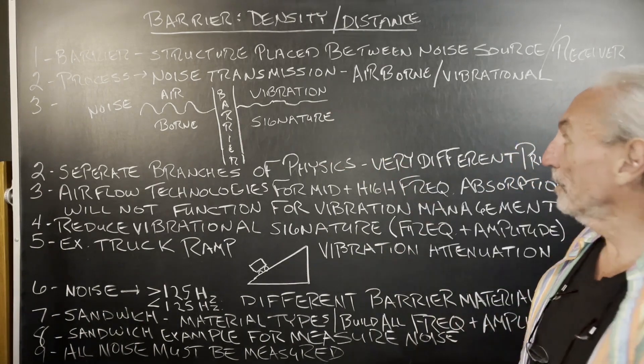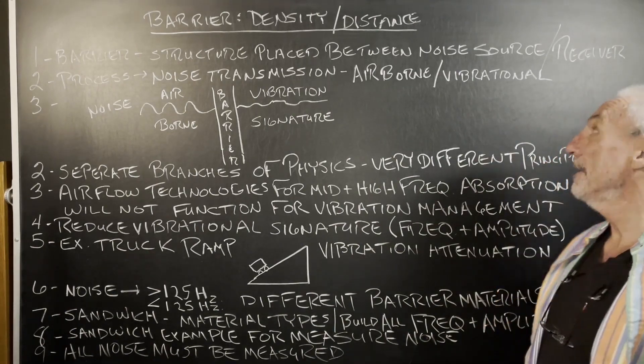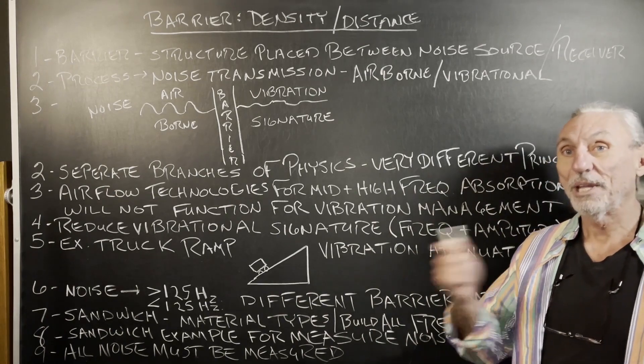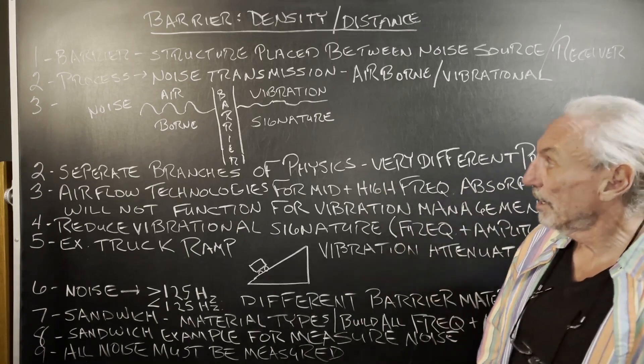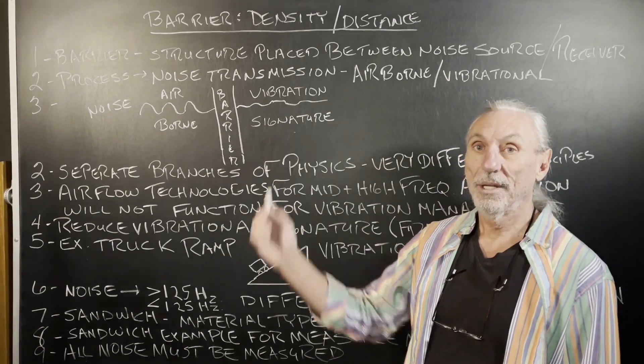So a barrier is the structure placed between the noise source, drums, and the receiver, the neighbor. That's the relationship you want to look at. Noise source and receiver. So we have to build a barrier between the noise and the receiver.